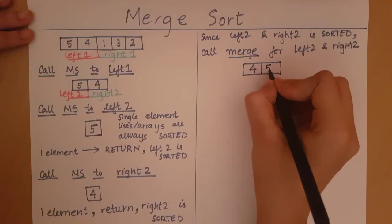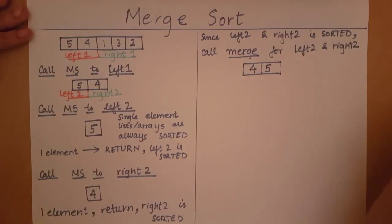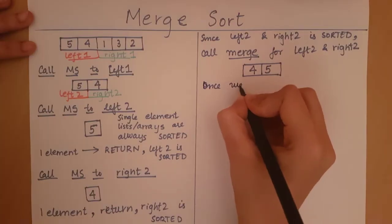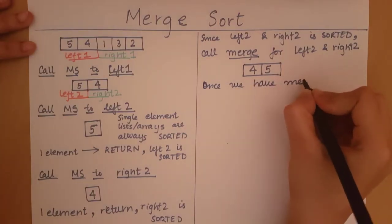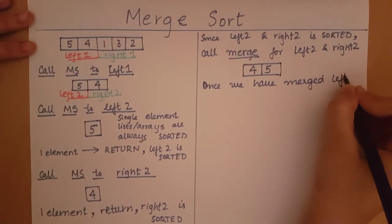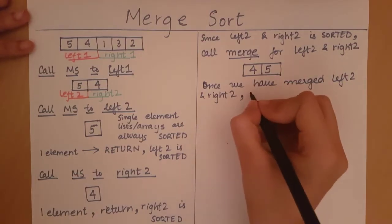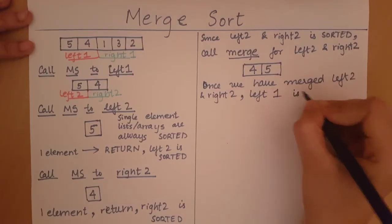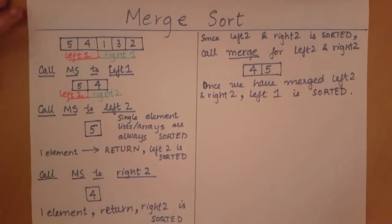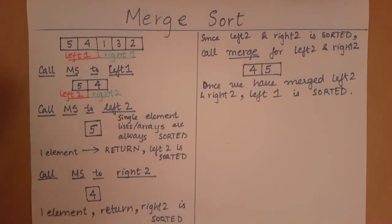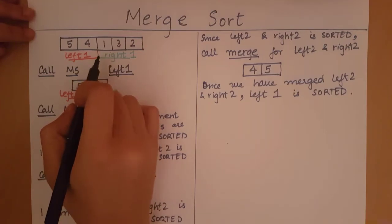Once we have merged left two and right two, we can say that left one is sorted. Because to sort left one, we needed to sort left two, sort right two, and merge them — that is exactly what we have done. So now that left one has been sorted, our job is to sort right one. We call merge sort on right one.